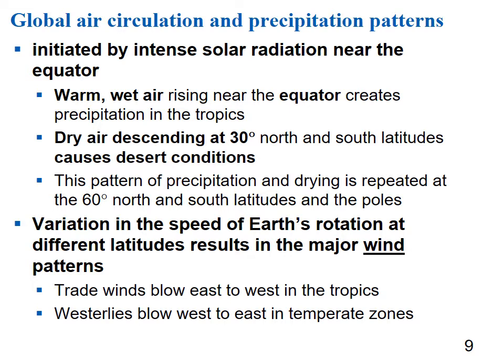Warm, wet air rises near the equator and creates precipitation in the tropics. Dry air descends at 30 degrees north and south latitudes, causing desert conditions. This pattern of precipitation and drying is repeated again at the 60-degree north and south latitudes and the poles. Trade winds blow east to west in the tropics and the westerlies blow west to east in more temperate zones.